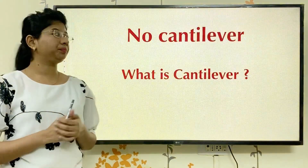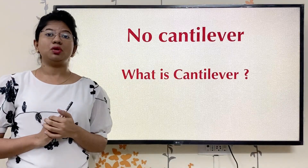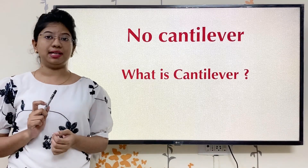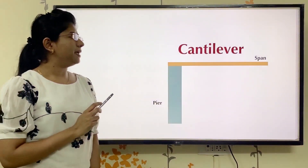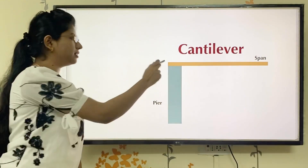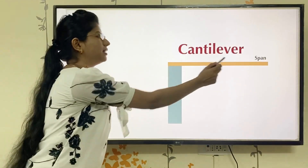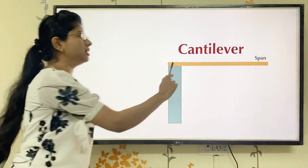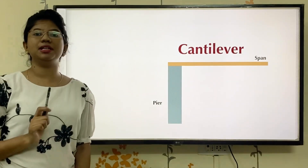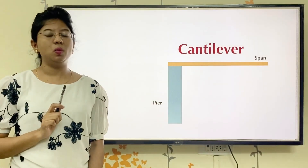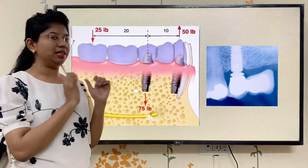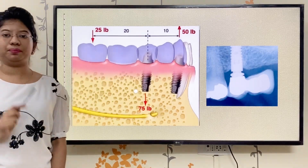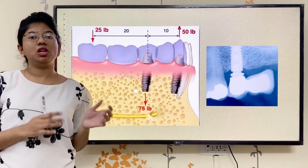The first rule is no cantilever. Before going on to what do you mean by no cantilever, we will first see what is cantilever. Imagine a bridge. In this bridge, there is a pier that is a pillar and over that there is a span. This bridge is supported at only one end. This area which is unsupported is considered as cantilever. Now I will correlate this example in dentistry — these are two implants and the quantity here is the cantilever.